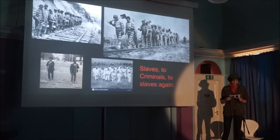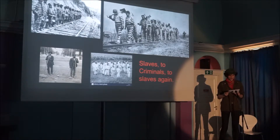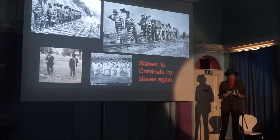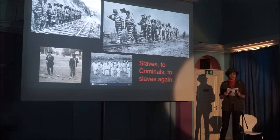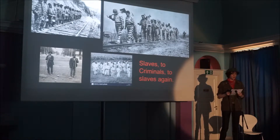Mass incarceration and prison labor began after the collapse of the slavery industry in the American South. After plantations were suddenly deprived of workers, the system of conventional slavery needed replacement, and fast. As anti-black rhetoric in the South was stronger than ever, African Americans — now legally free people under the United States Constitution — were arrested for things white Americans could never before imagine being arrested for, like loitering or staying out past curfew. Thousands of African Americans almost overnight went from being free people to slaves on plantations again.